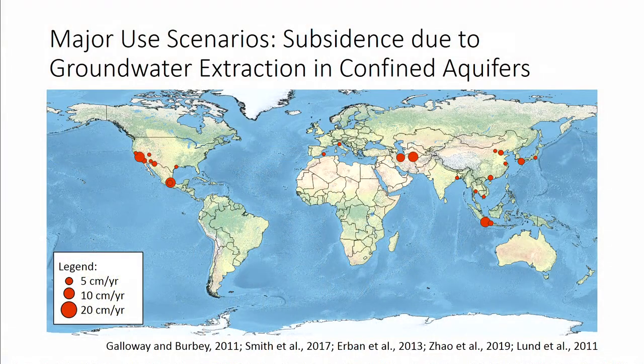I wanted to show you first here just a global map that compiles different studies of land subsidence. Subsidence will typically happen in confined aquifers under major use scenarios — where you have a lot of groundwater demand and they're pumping a significant portion out of confined aquifers. You can get some subsidence in unconfined aquifers as well, but because the amount of subsidence is proportional to the change in water level or head, you're typically getting much, much bigger drops in confined aquifers. So that's where you see most of the subsidence.